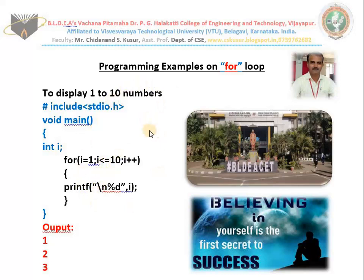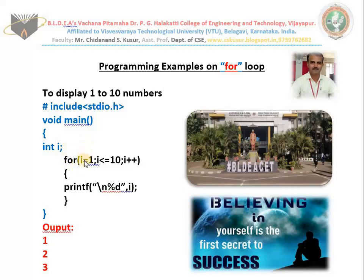In today's class, I teach you only examples on for. The first example I explained in my last class is to print 1 to 10 numbers. It is a very simple program. As we know already, for has three parts: first part, second part, third part. And this is what the body of for does. Always the first part works only once for the first time. That means 1 will be stored in the variable i first.